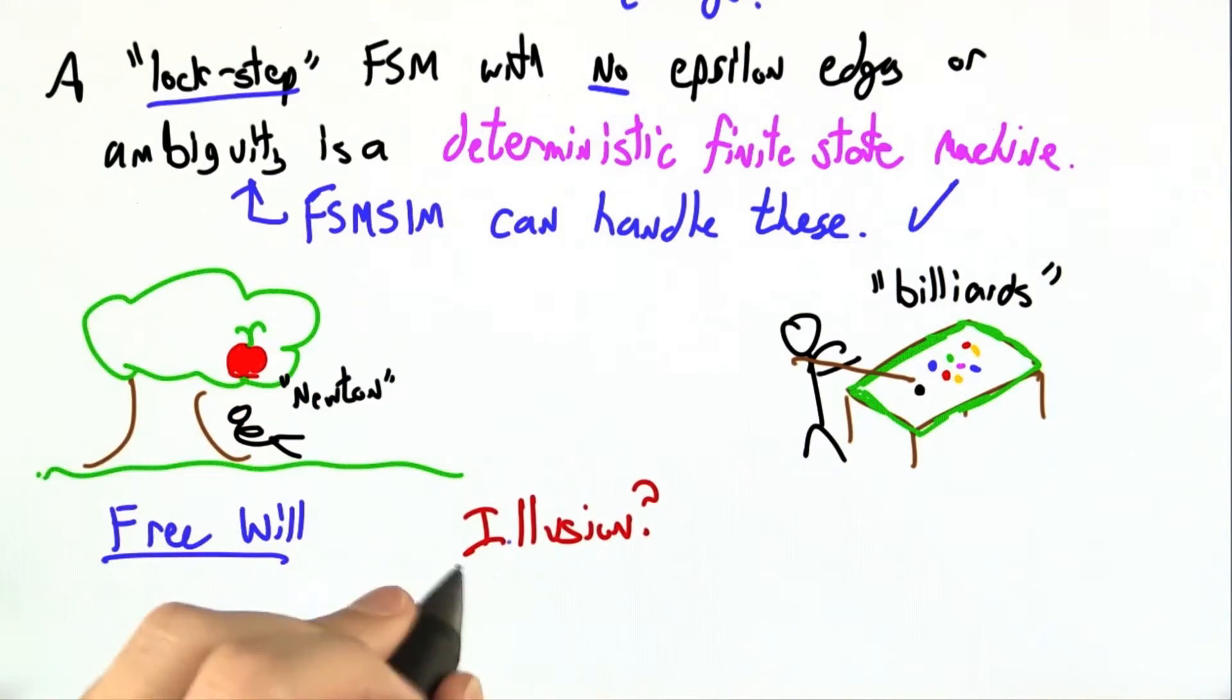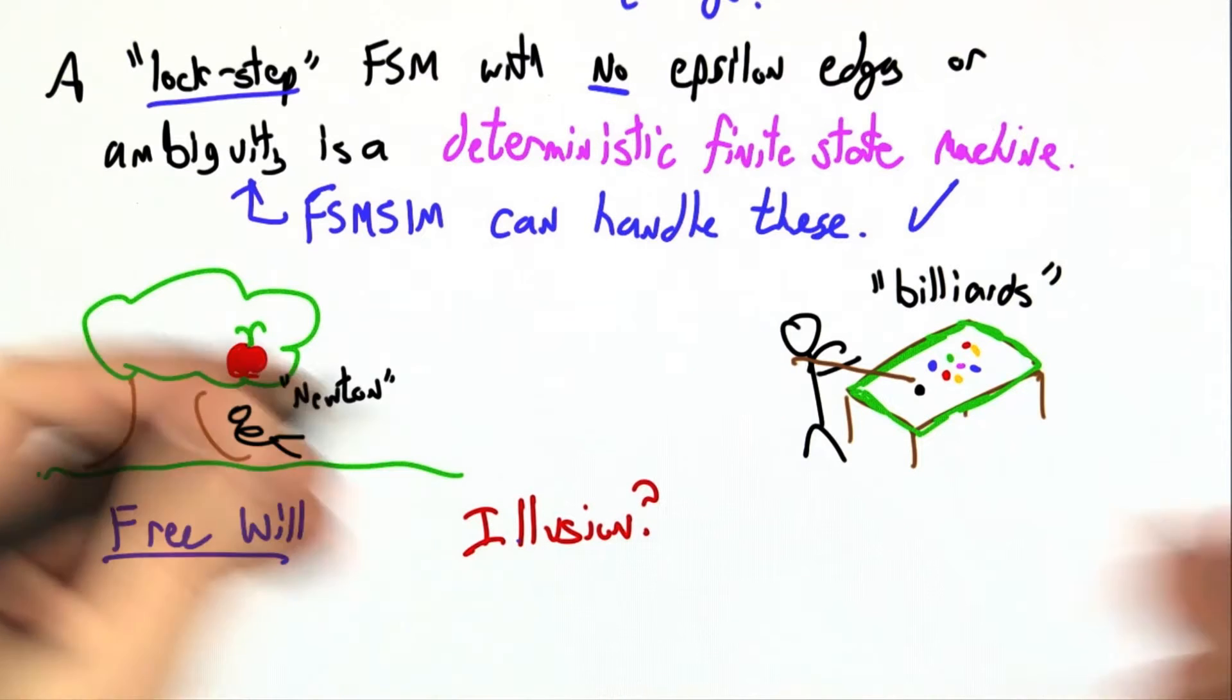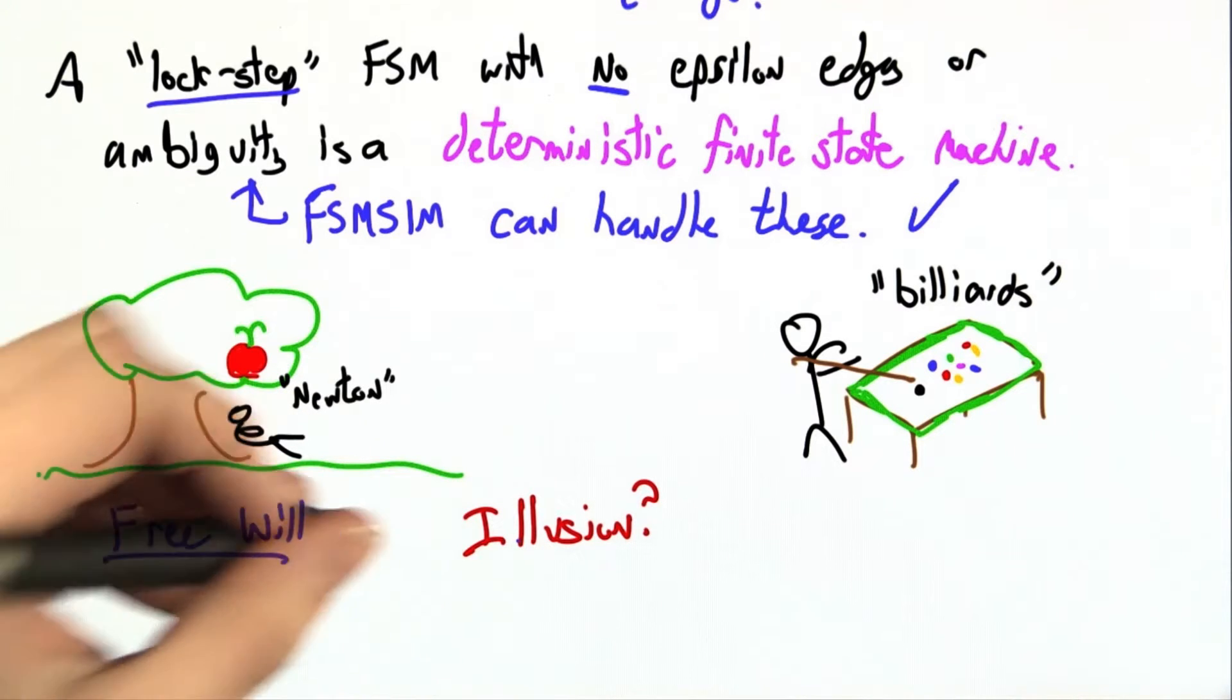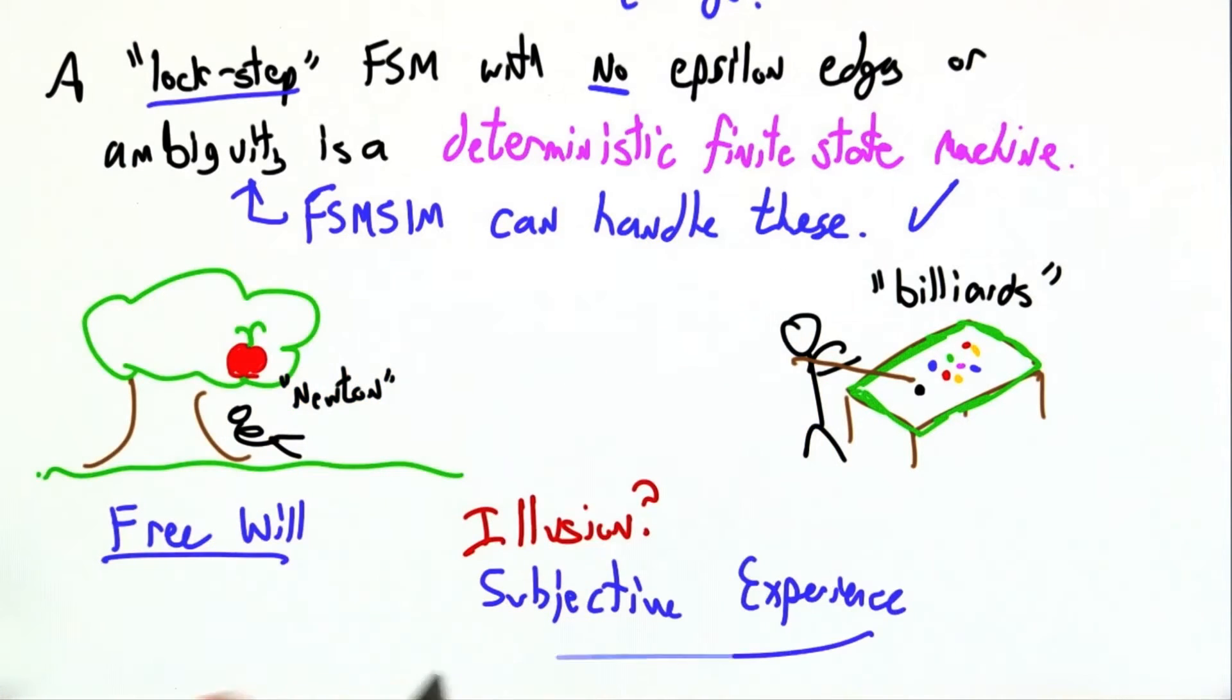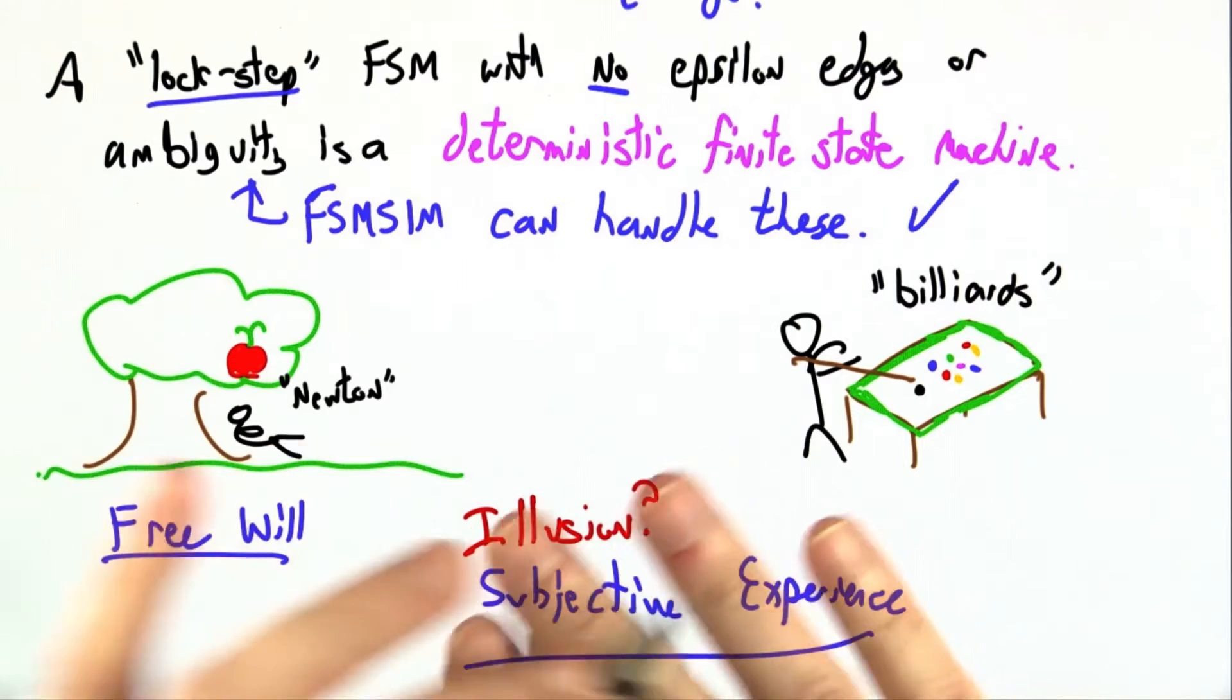Some philosophers will approach this by suggesting that we have the illusion of free will, and that's a disconcerting thought, which is handy for describing subjective experience. We certainly often feel like we have free will. Regardless of what's going on in the real world...